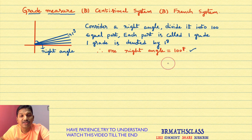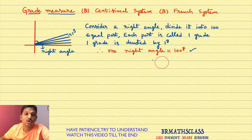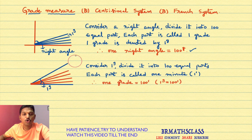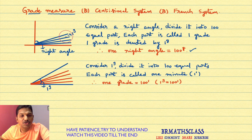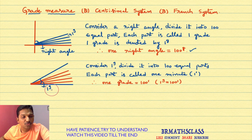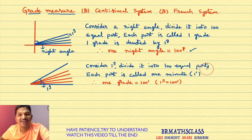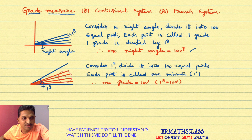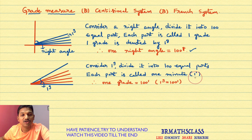Now we will try to understand one grade equals how many minutes. I will consider one grade. Look here — this is one grade. Consider one grade and divide it into 100 equal parts. Each part is called one minute.